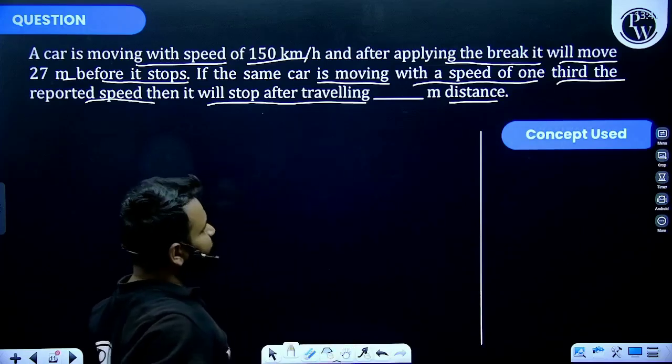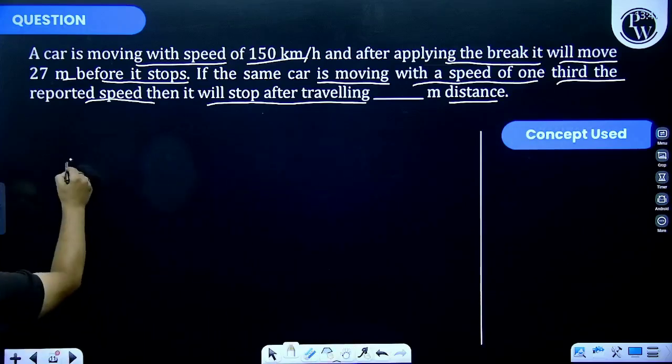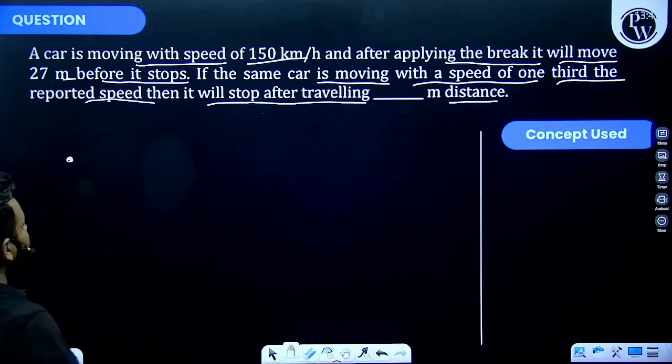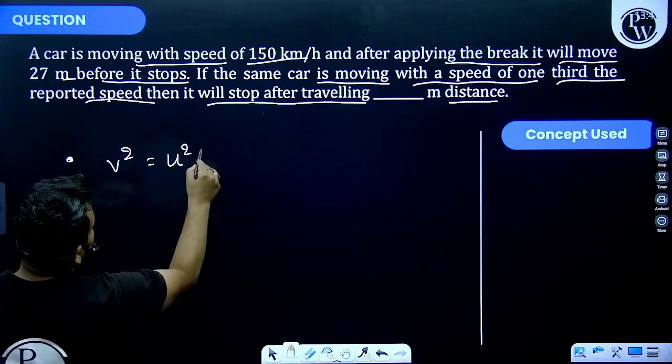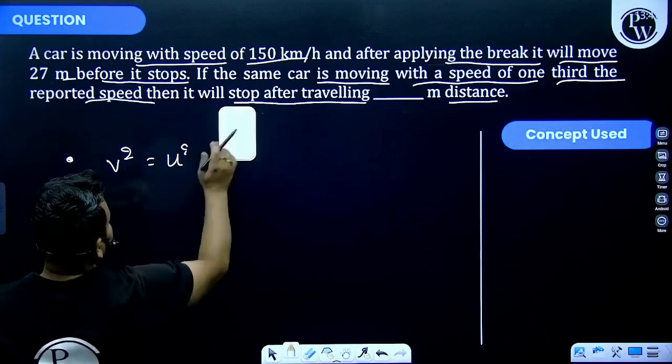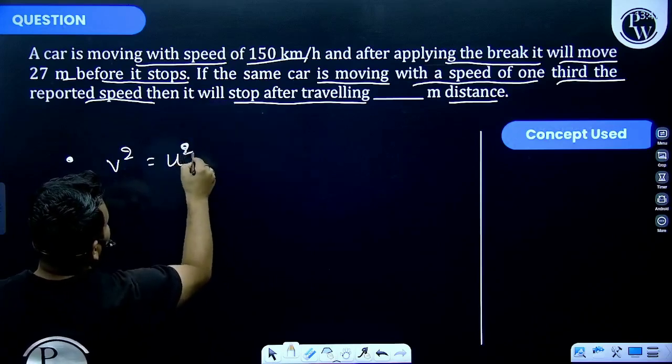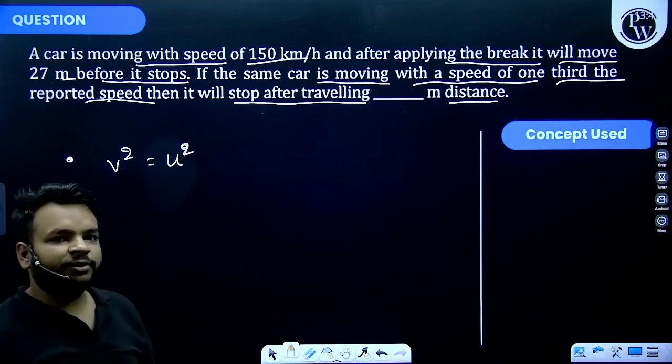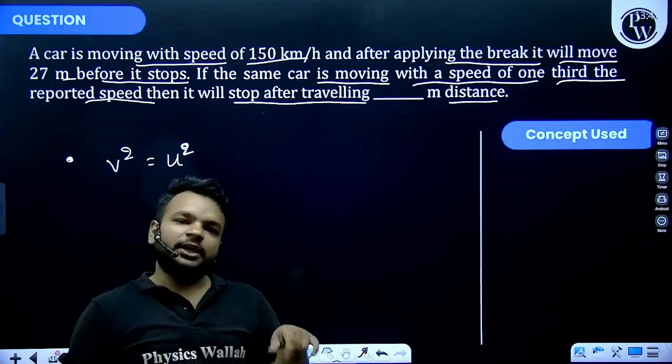So we know from the equation of motion that v² = u² + 2as. But we know for a stopping we apply brake, and when we apply brake there is a retardation for the car.